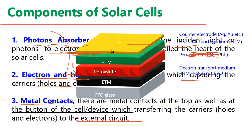Perovskite is not a single material — it is a family. The classic material is methylammonium lead triiodide (MAPbI₃). People replace lead (Pb) with tin (Sn), germanium (Ge), antimony (Sb), or bismuth (Bi). They also replace iodine with chlorine or bromine, or mix all three halogens, and substitute methylammonium with cesium. There is huge potential to find research gaps within this chemical space.